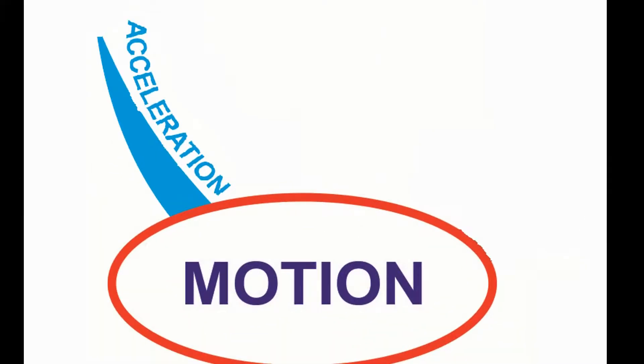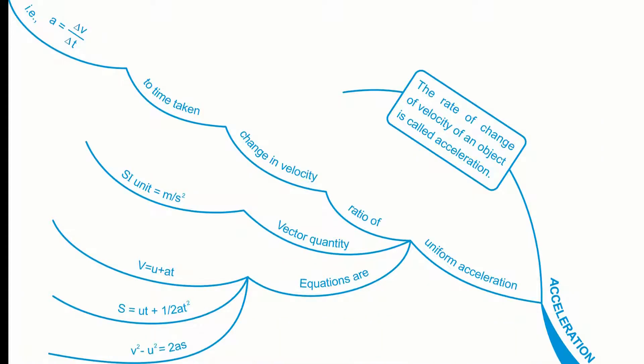Our third branch is acceleration. The keywords used are: definition, uniform acceleration, and ratio of change in velocity to time taken. a = Δv/Δt. It's a vector quantity. SI unit = m/s².